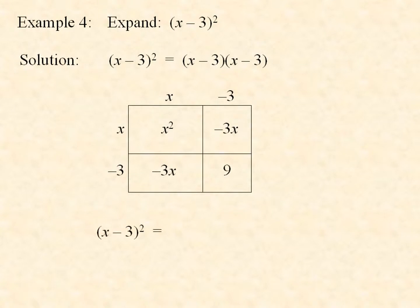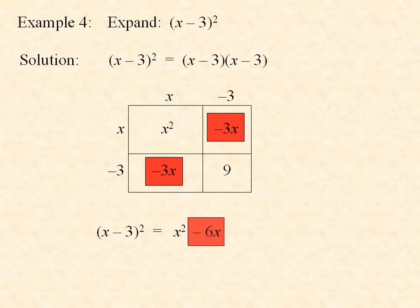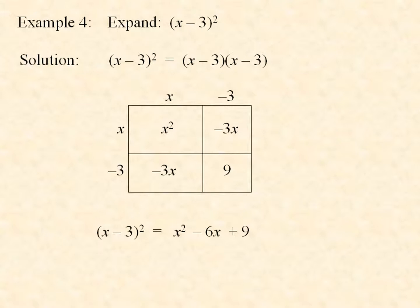So the quantity x minus 3 squared is equal to the sum of these individual areas. The first area is x squared. The negative 3x and the negative 3x are like terms, so they can be combined; they add to negative 6x. And then we have the last little rectangle, the 9. So the quantity x minus 3 squared is equal to x squared minus 6x plus 9.